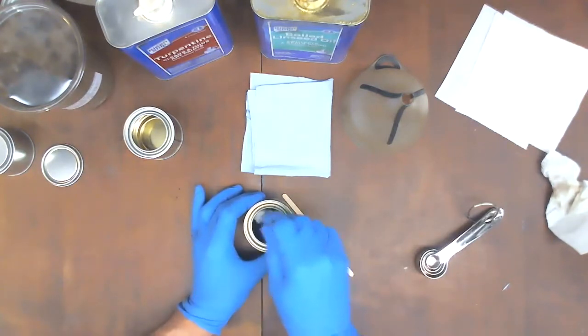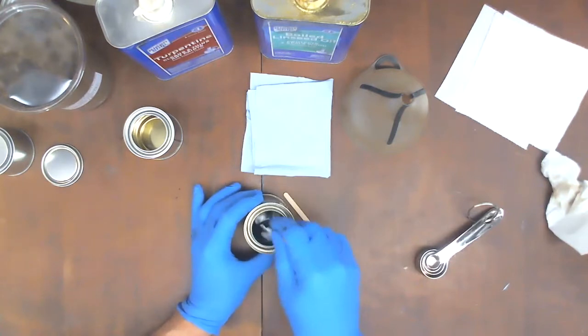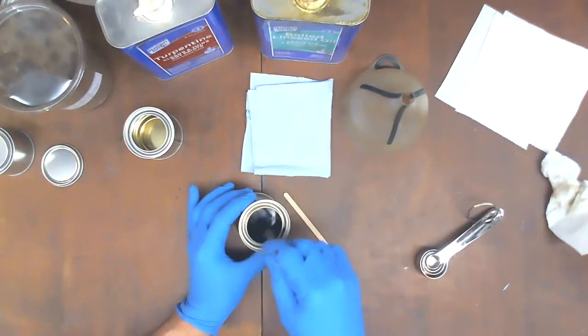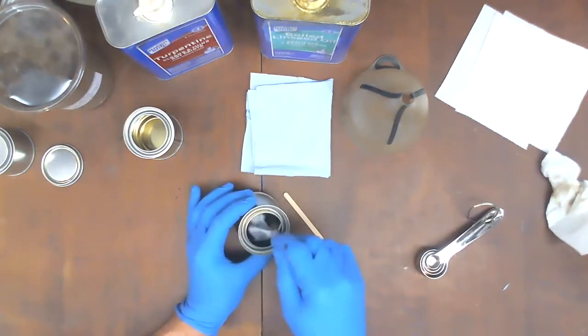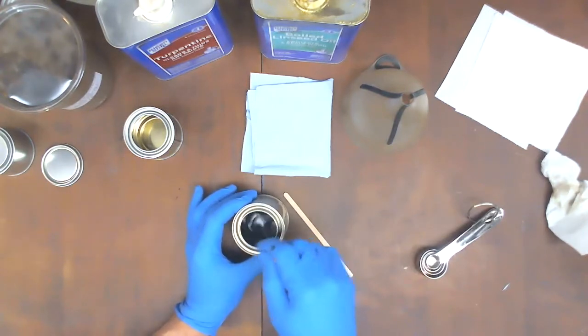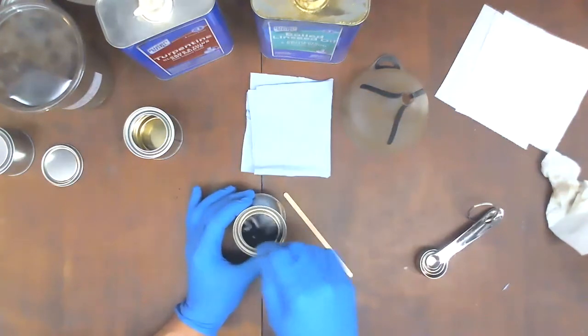When I'm producing larger quantities of this, I will actually put a wire whisk in my drill press and put the can underneath there and drop that into the can and let the drill press stir it for me. That's much larger quantities. I'll let it run for three or four or five minutes stirring simply because I'm off mixing another batch. It doesn't really require that much effort, but you want to stir it well.